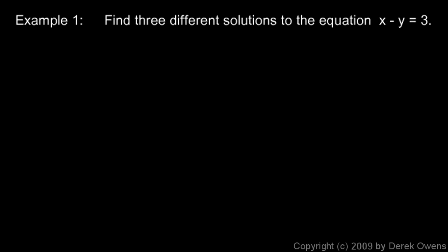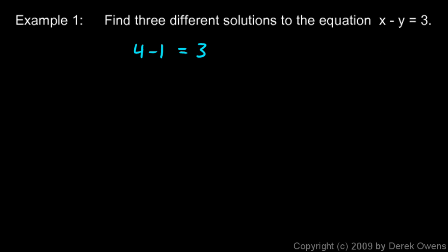Example 1: find three different solutions to the equation x minus y equals 3. Let's try to write this equation and put in some numbers for x and y such that we end up with a true statement. We could say 4 minus 1 equals 3. So we're using the value 4 for x and the value 1 for y. That's one solution: x equals 4, y equals 1.